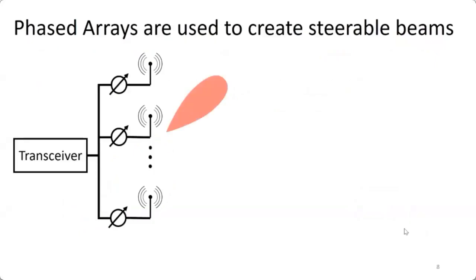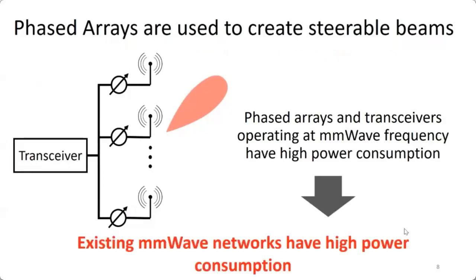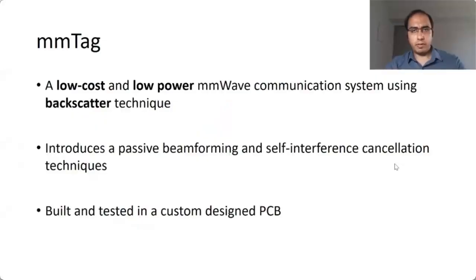To create and steer a beam, millimeter wave systems generally use a phased array — a set of antennas where each element is controlled through an RF front end. The RF front end and transceiver consume extensive power at millimeter wave, so the phased array is not suitable for devices with limited energy. To solve this, we present mm-Tag: a low-cost, low-power millimeter wave communication system that uses backscatter technique. mm-Tag introduces passive beamforming and employs a self-interference cancellation technique. We built and tested a prototype on a custom-designed PCB.